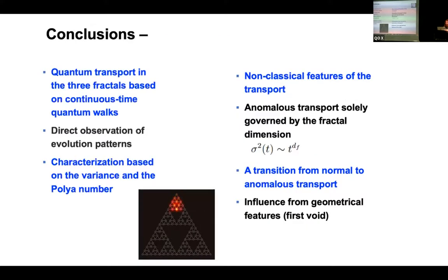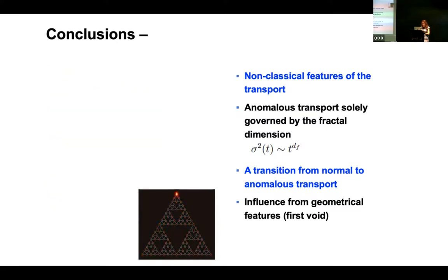What should change? What changes is that I started diffusing with the exponent 1.89 from the very beginning because it sees the hole from the very beginning. So it starts already in this case from the fractal regime and the rest of the features are the same. So my partial conclusions here is that by looking at quantum transport in three fractals based on continuous time quantum walks, we could observe the evolution patterns. We could see signatures of plateaus in the Polya number when studying the variance and the Polya number. And we see that this diffusion is anomalous. It's propagating with the fractal dimension. Sigma squared is going to the time to the exponent, which is my fractal dimension. And the voids are very important because they decide when you start seeing this fractal dimension.